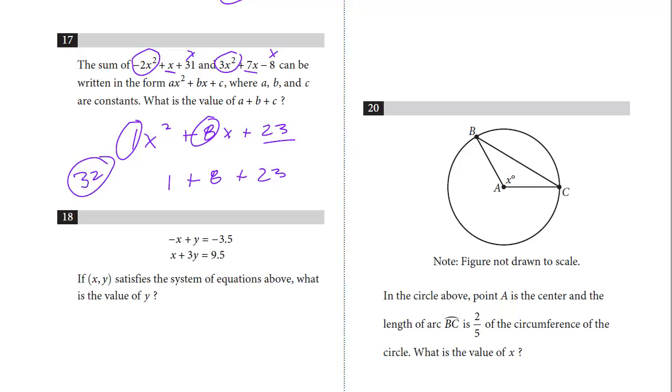Let's take a look at question 18. If XY satisfies the system of equations above, what's the value of Y? For this, this is just a system of equations. I would just use elimination, and in fact, they already give it to you. If you just combine these, the X's will cancel out. We're just going to add the two together. These are going to cancel out. We get 4Y, and then we get 9.5.